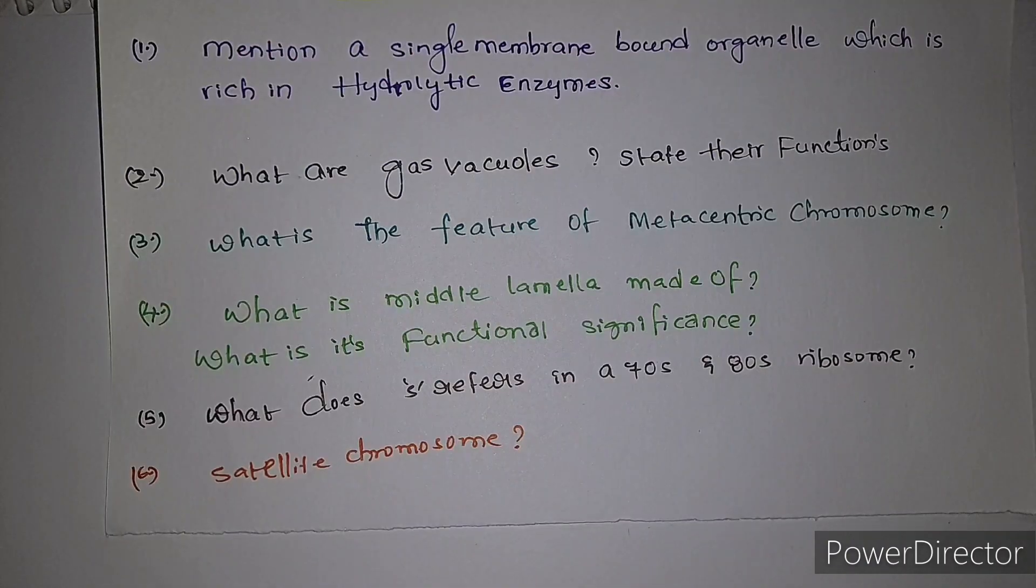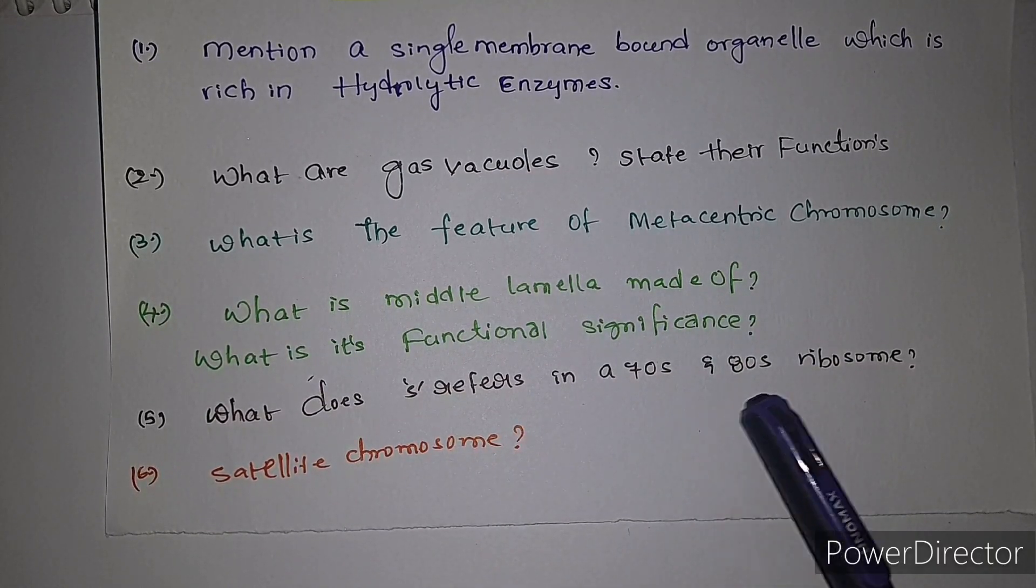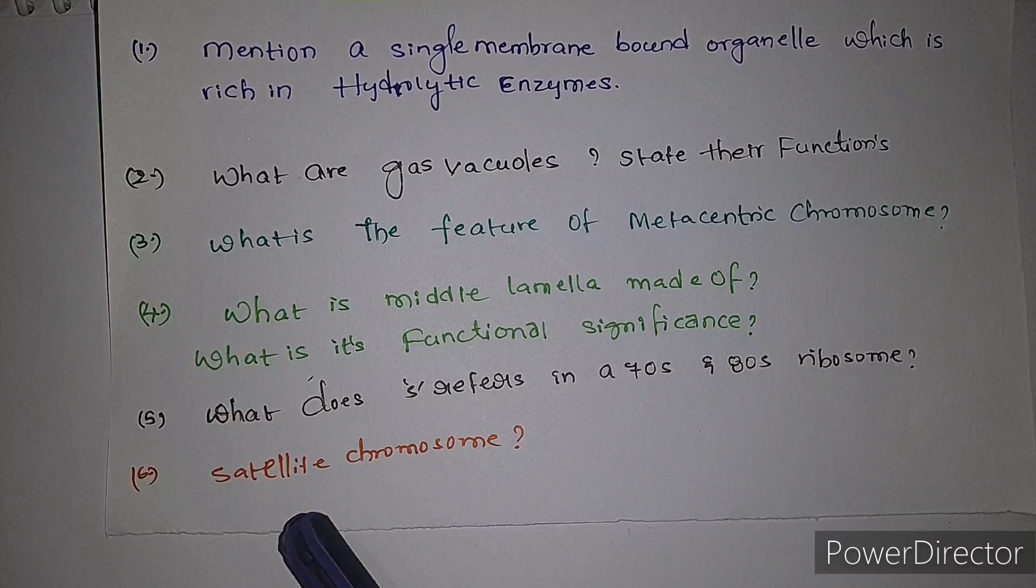Third question: what is the feature of metacentric chromosomes? Fourth question: what is middle lamella made of? What is its functional significance? Fifth question: what does S refer to in 70S and 80S ribosome? Sixth question: satellite chromosome.